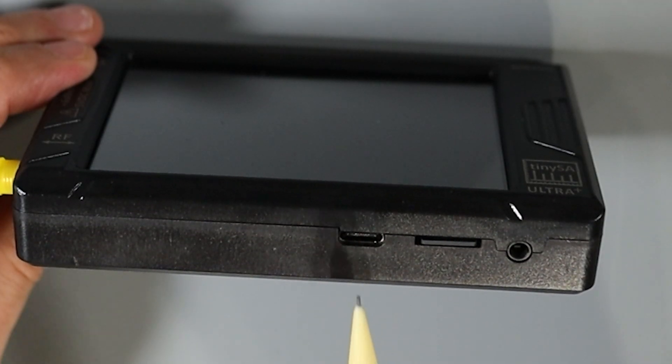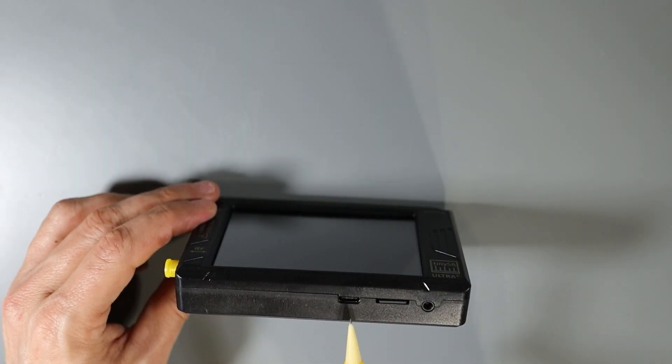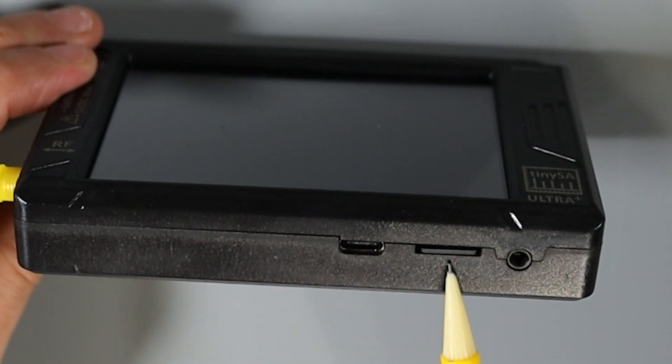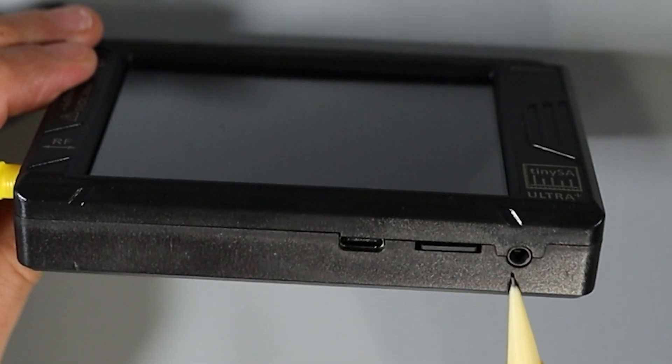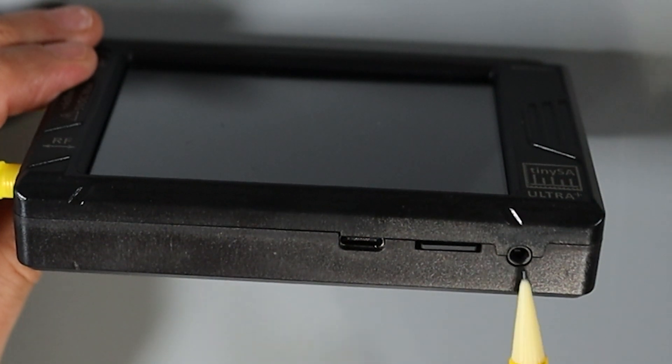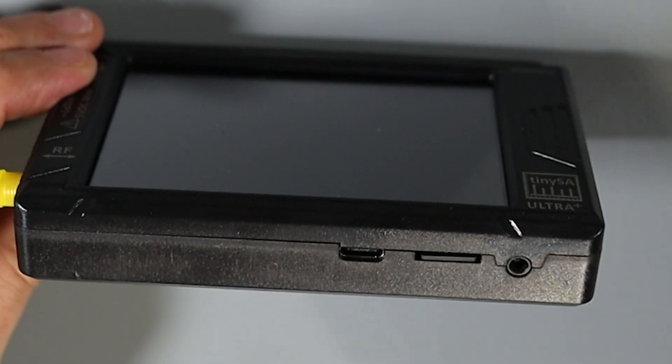Down on the bottom of the TinySA, we have a USB-C charging port. You can also use this to interface with a computer so you can run the software and have a larger screen to look at. Over here we have a slot for a micro SD card, and as you can see, this unit shipped with an SD card installed. And then over here is a 3.5 millimeter headphone jack. You can actually use this to listen to the signals that the TinySA is receiving.